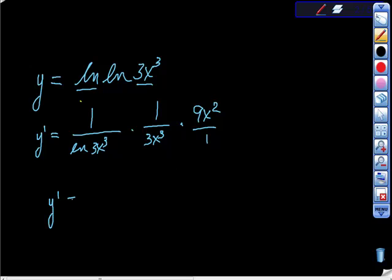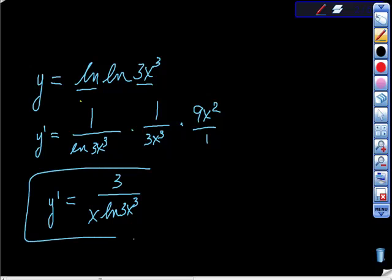I will tell you, maybe it'll help you to just know it, but the final derivative that I got after simplification was 3 over x ln of 3x cubed. So if you have a hard time getting to that, let me know, and I'll walk you through it, assuming I didn't make any mistakes.